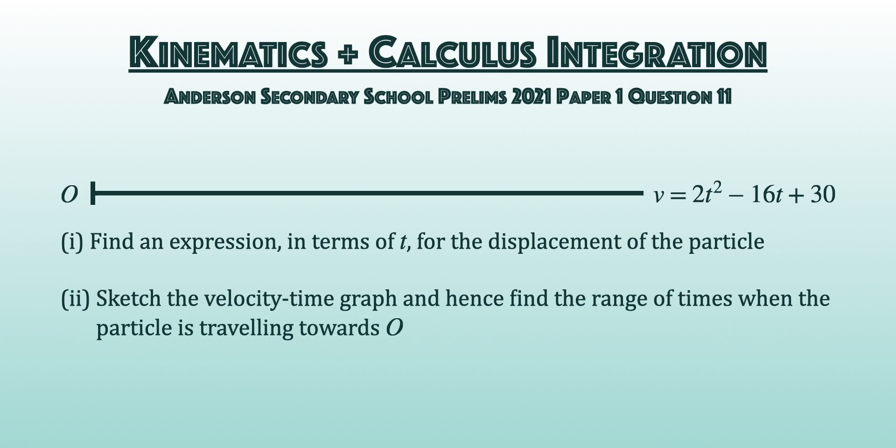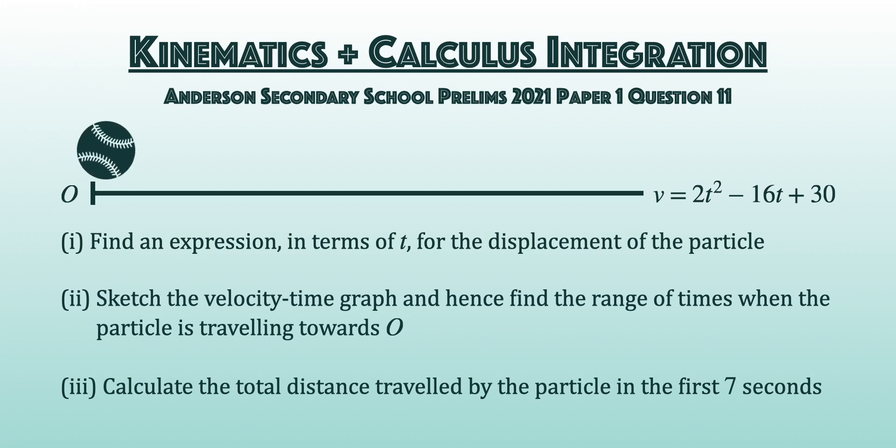In part 2, sketch the velocity-time graph and find the range of times when it is traveling towards O. In part 3, calculate the distance traveled in the first 7 seconds.